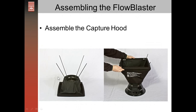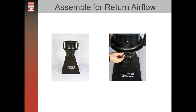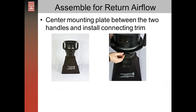To assemble the capture hood, put the four poles down into the pole pockets, slide the hood up over the poles, and there are also pole pockets in the frame around the top of the hood. Make sure those are seated all the way in at both the bottom and the top. To assemble for return flow, center the handles over the gauge board, then put the connecting trim on — the same connecting trim used to attach the flow rings to the duct blaster fan — to connect the duct blaster fan to the Flow Blaster housing.